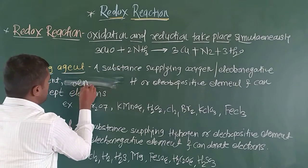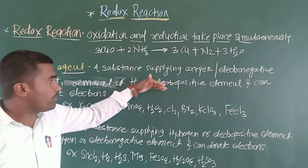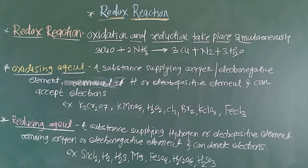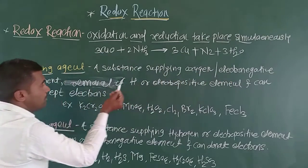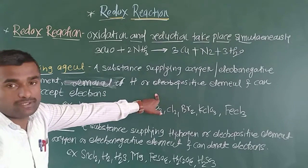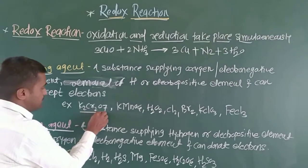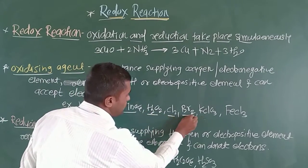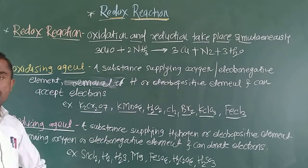An oxidizing agent involves removal of hydrogen or removal of an electropositive element, or it can accept electrons. Examples of strong oxidizing agents include K2Cr2O7, KMnO4, H2O2, Cl2, Br2, KClO3, and FeCl3.